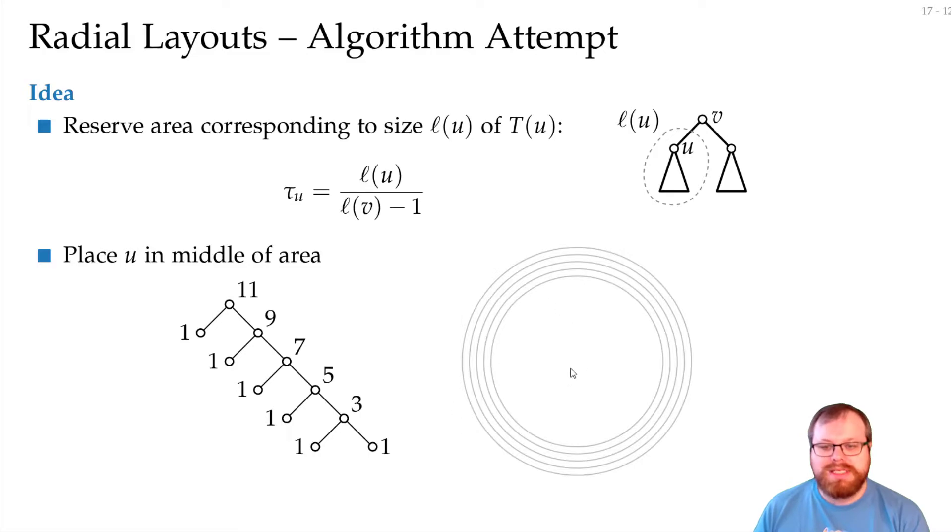Let's have a look at an example. We start with our circles here. I spread them out far now so that we can see something. We place the root in the middle, and now we have two subtrees. This one has size 1, this one has size 9. So the area of the circle we give to this subtree is 1 tenth, and the area for this subtree is 9 tenth. We place both these vertices in the middle of this area. So this one is in the middle here, this one is in the middle here, and we connect them to the root by a straight line edge. Now here we don't have to continue, but at number 9 we have to.